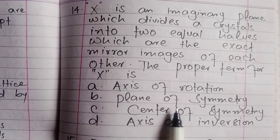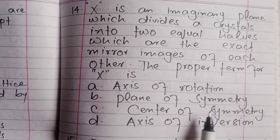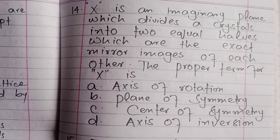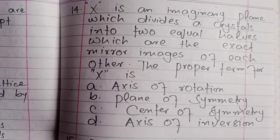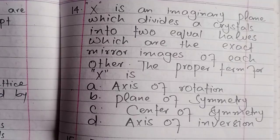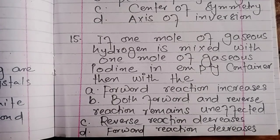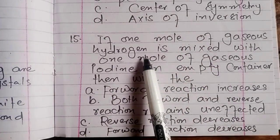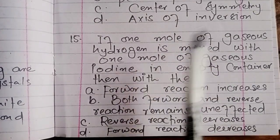The options for crystal symmetry are: axis of rotation, axis of rotation, plane of symmetry, or center of symmetry. Question 15: One mole of gaseous hydrogen reacts with one mole of gaseous iodine in an empty container.